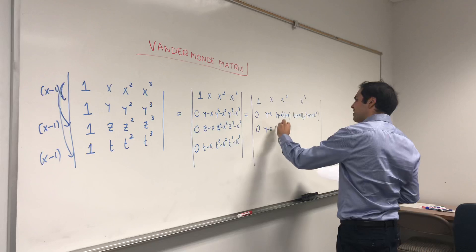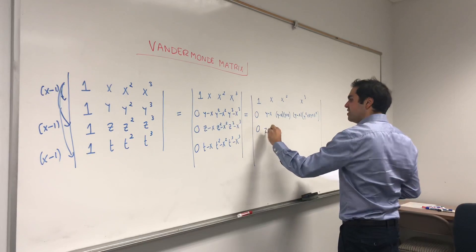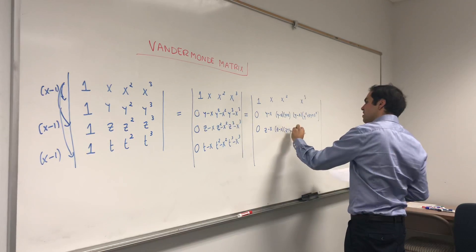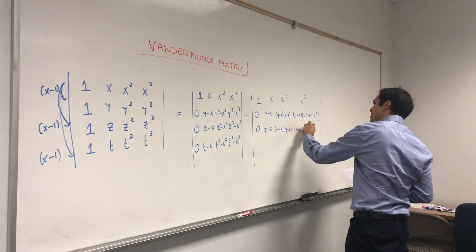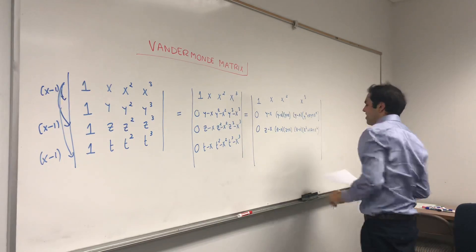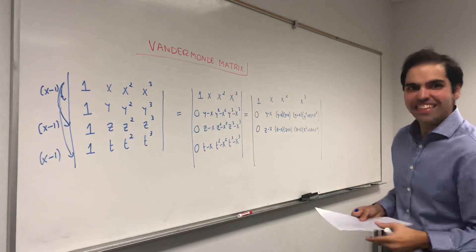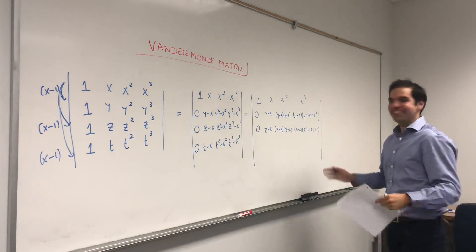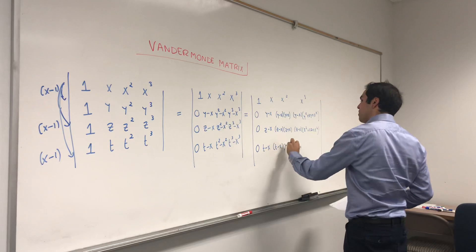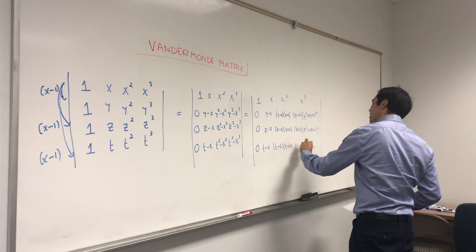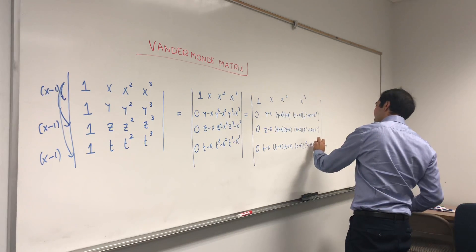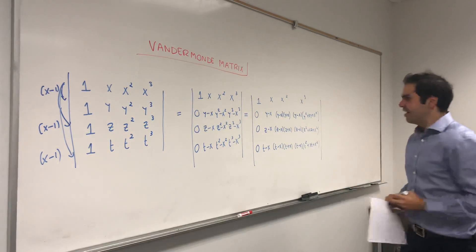Same thing with z: z−x, (z−x)(z+x), and (z−x)(z²+xz+x²). And then for t: t−x, (t−x)(t+x), and (t−x)(t²+xt+x²).